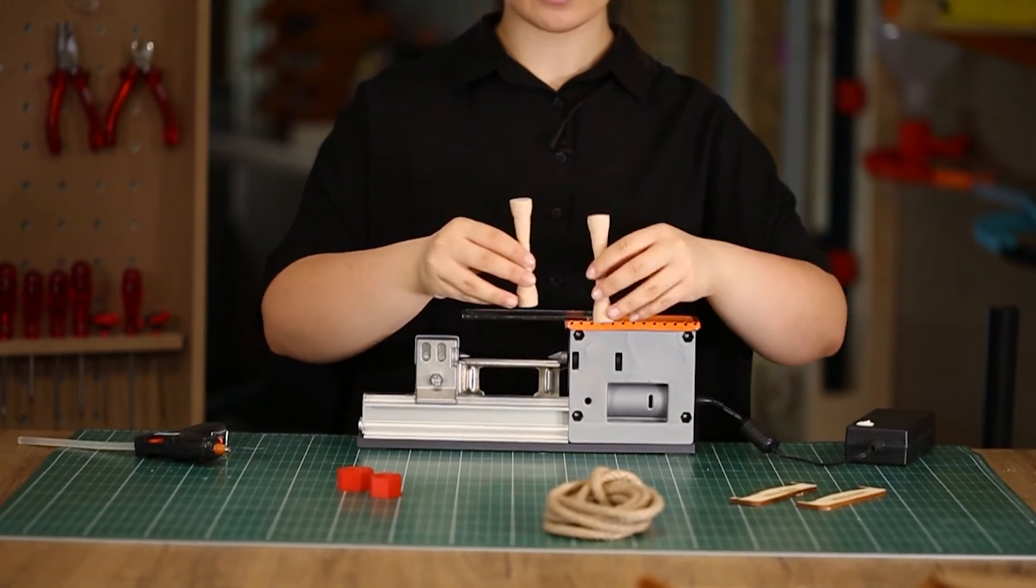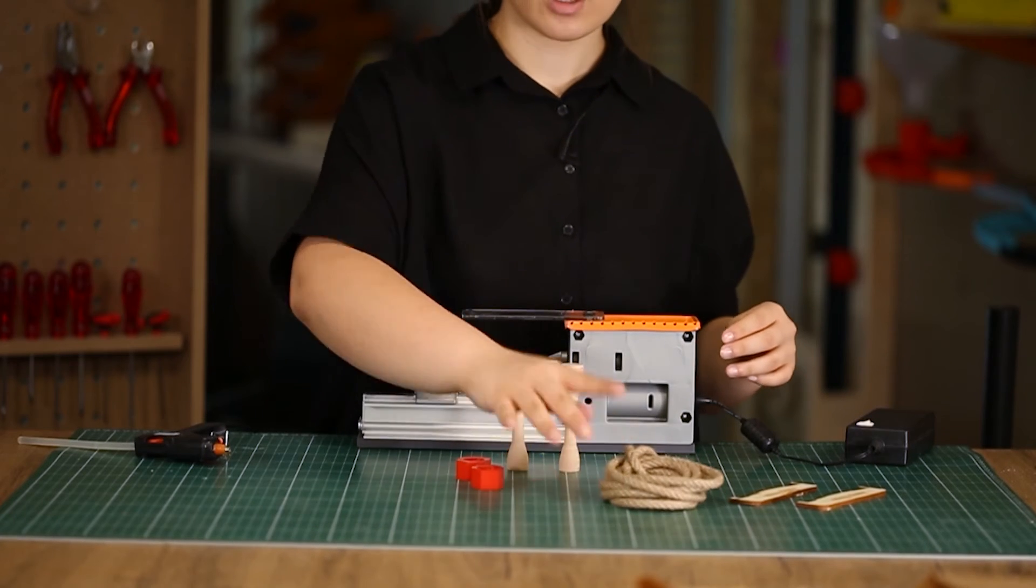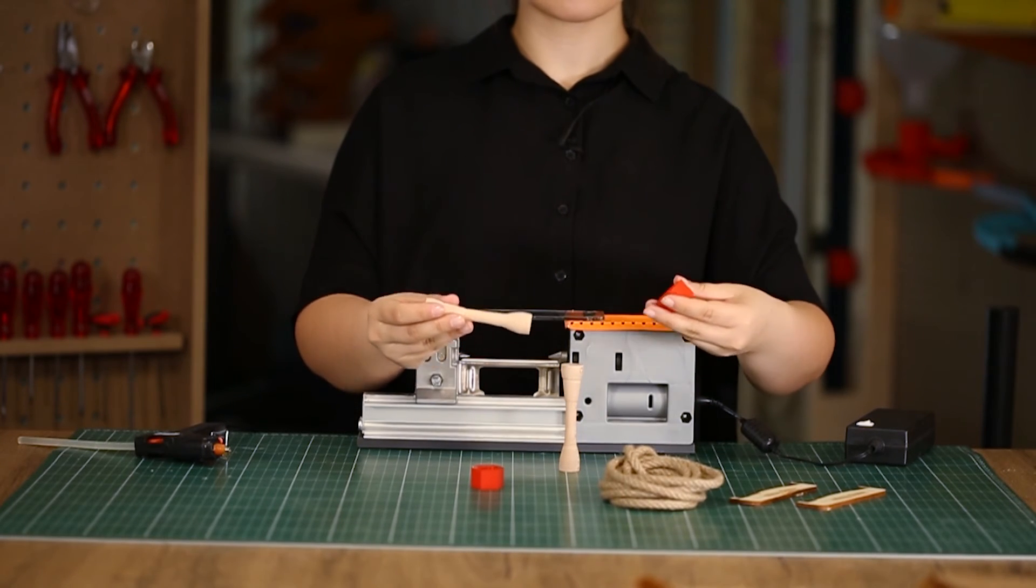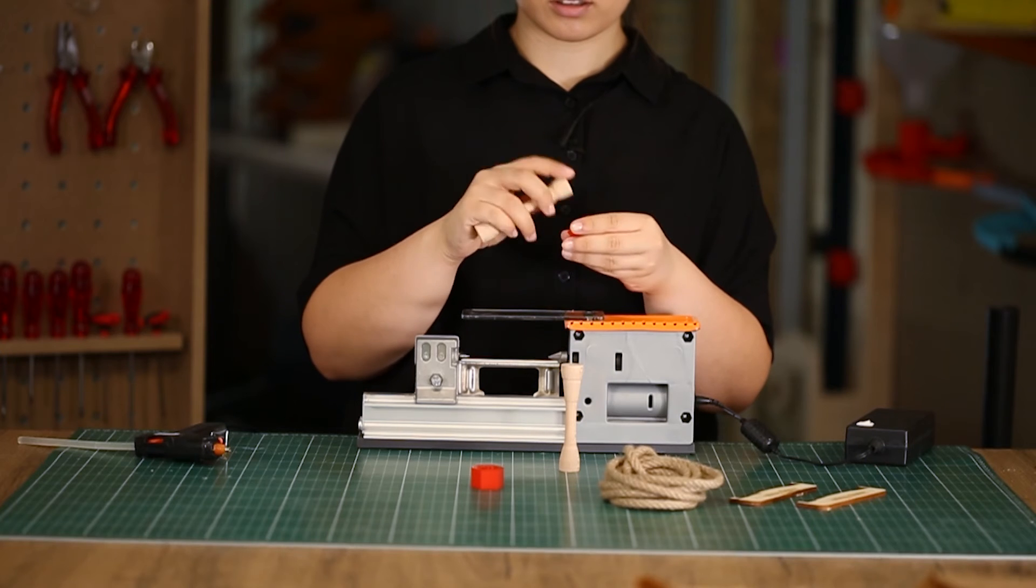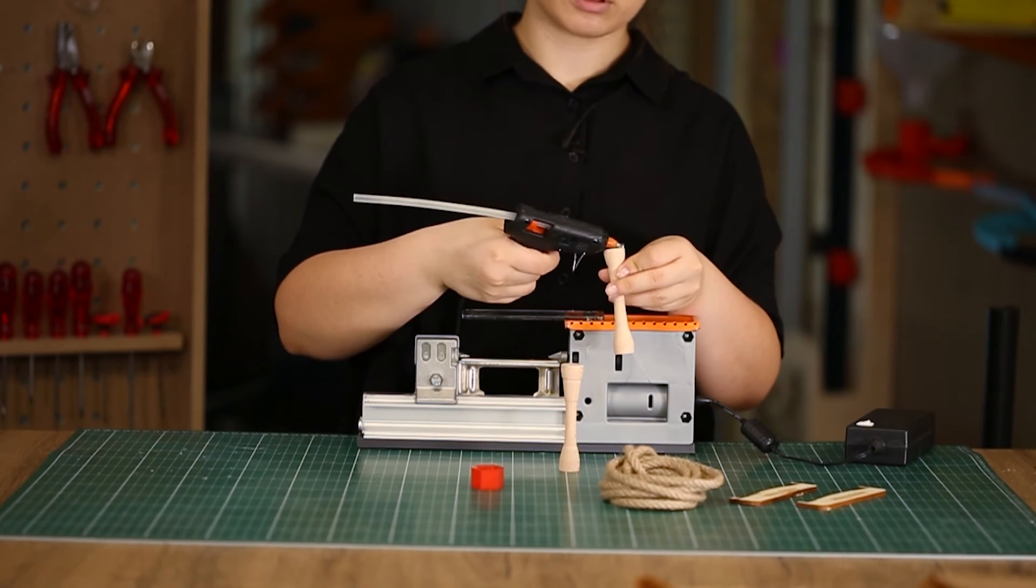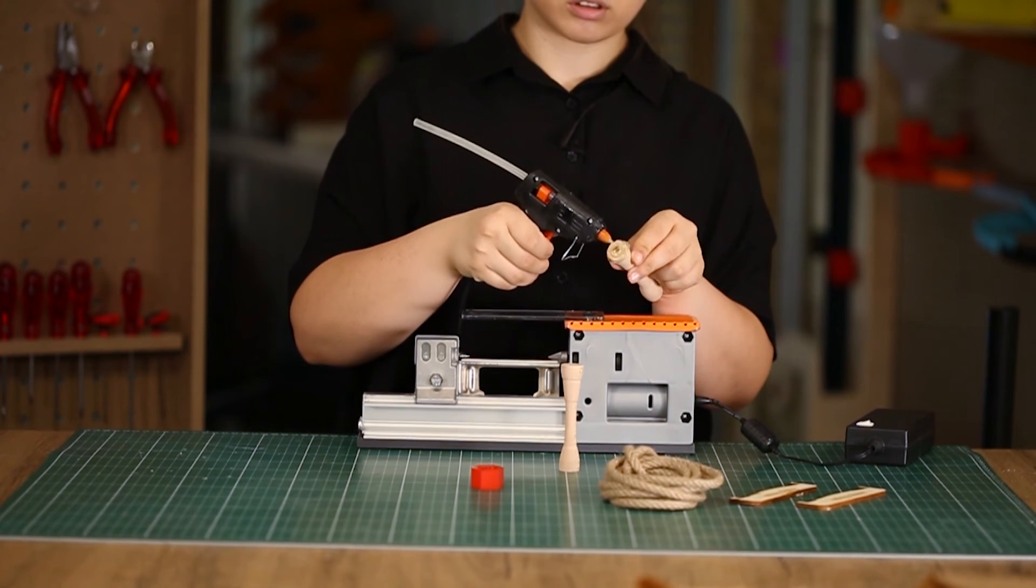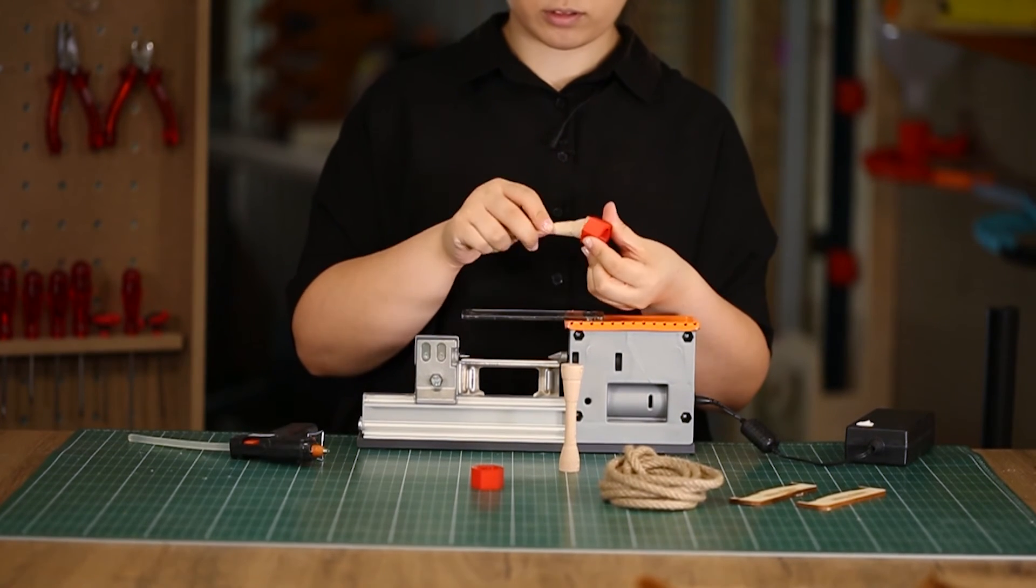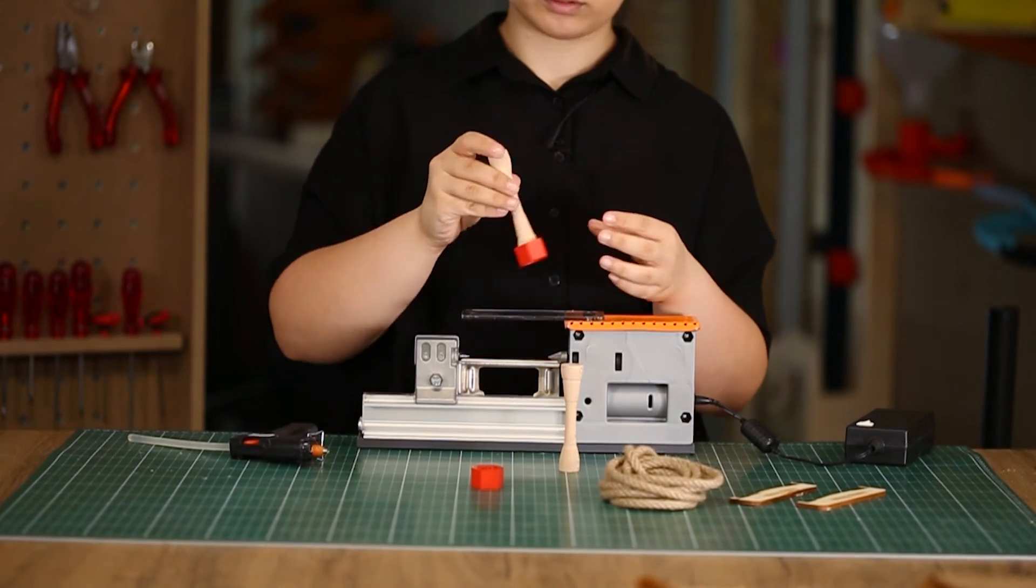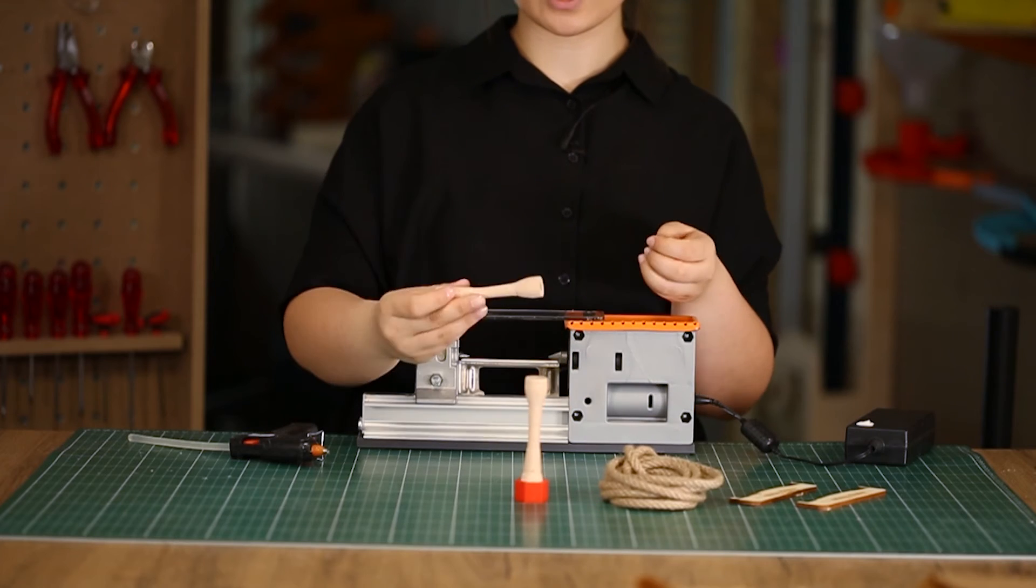Our handles are ready. Now, it's time to put our pieces together. First of all, we will stick the handles and 3D parts together. To stick them, we will use a little bit of hot glue. First one is ready. Now, we will repeat the same process for the second one.